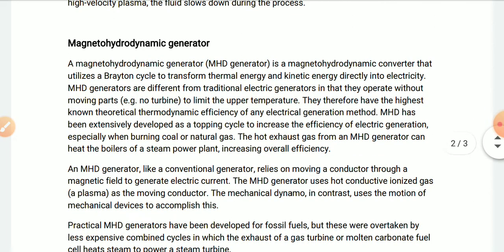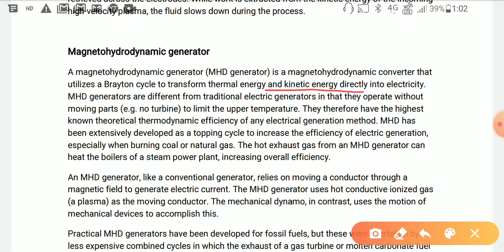A magnetohydrodynamic generator is a magnetohydrodynamic converter that utilizes a Brayton cycle to transfer the thermal and kinetic energy directly into electricity. MHD generators are different from traditional electric generators in that they operate without moving parts, that is, no turbine. They therefore have the highest known theoretical thermodynamic efficiency of any electrical generation method.